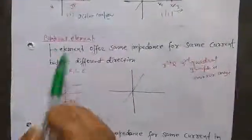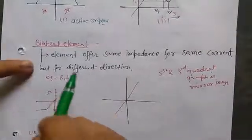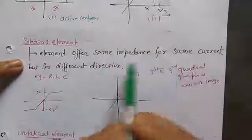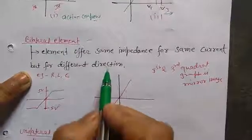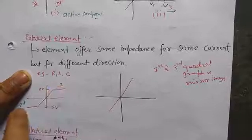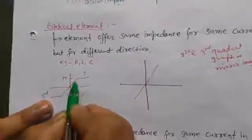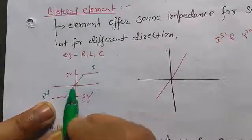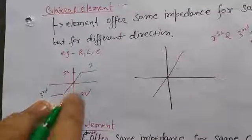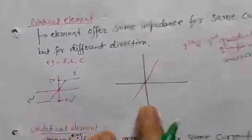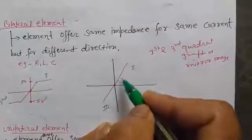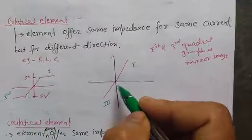Now let's move to bilateral elements. Bilateral elements offer the same impedance for the same current but in different directions. If we plot the graph, the graph in the first quadrant and in the third quadrant are mirror images of each other. As you can see, this graph goes up to 5 volts in Q1 and 5 volts in Q3 — they are mirror images, so this component is a bilateral element. The second graph also has Q1 and Q3 plots that are mirror images, so it also belongs to bilateral elements.